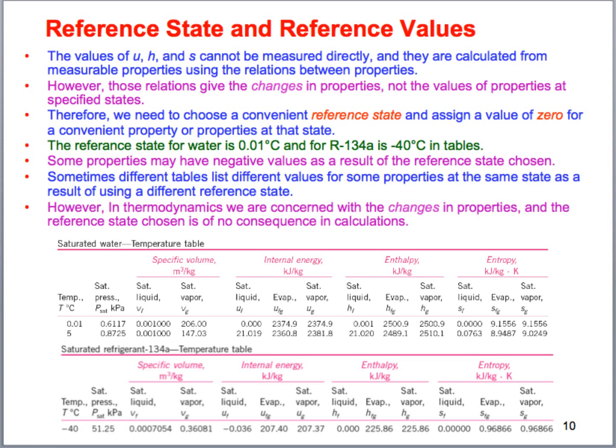When we look at these values, we're really looking at the difference between two states of interest, and that is what will give us the result we're looking for when we perform our analysis. Keep in mind that these are relative values to a reference state — that's why you may see a negative internal energy pop up somewhere on these charts.